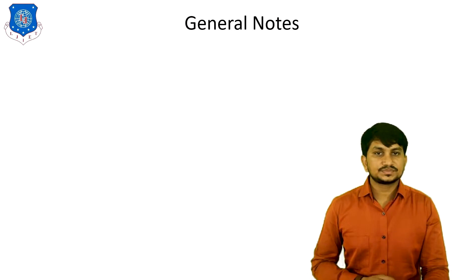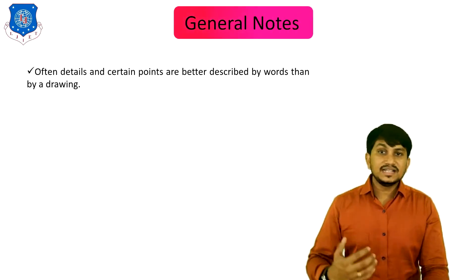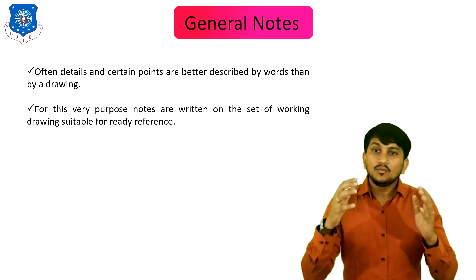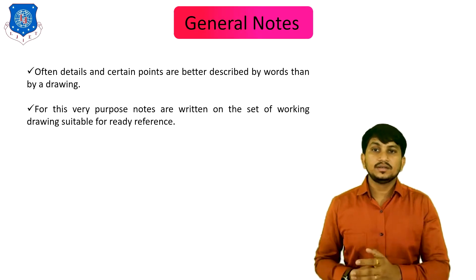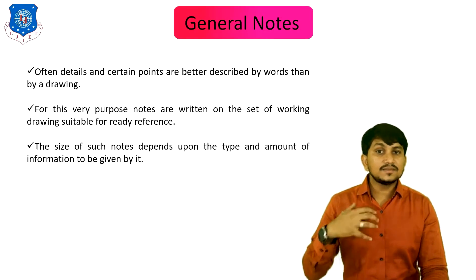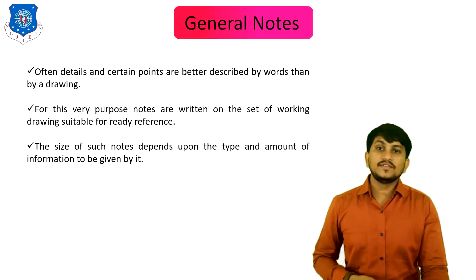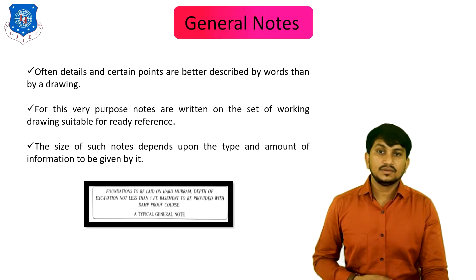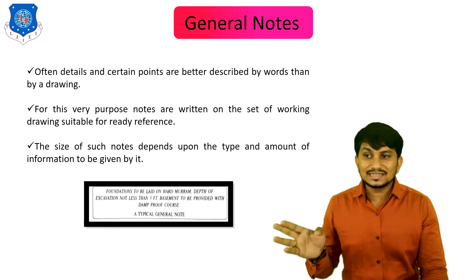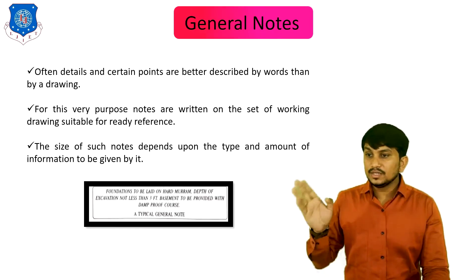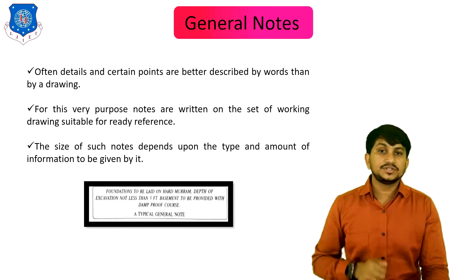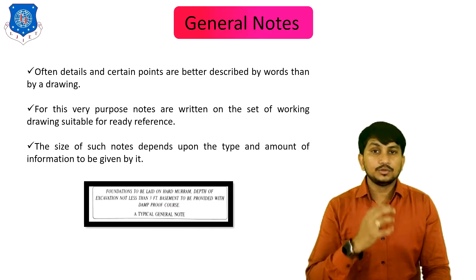The second detail is general notes. Often, certain points are better described by words than by drawings. For this purpose, notes are written on the set of drawings suitable for easy reference. The size of such notes depends upon the type and amount of information to be given to the construction engineer for proper construction of that component.